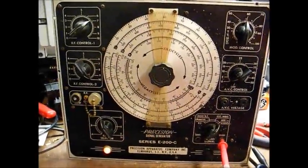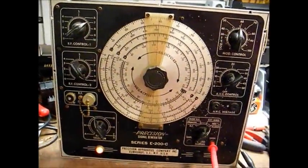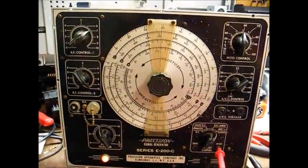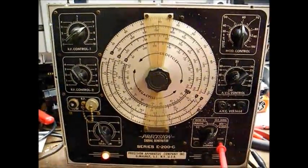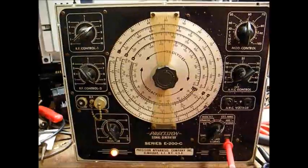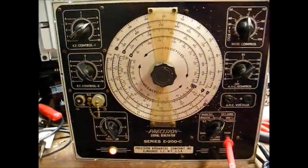Okay, back on the Precision E200C signal generator. I'm trying to figure out what's wrong with the audio oscillator circuit. It's basically non-existent. When viewed on a scope, let's turn the light off so we can see it.